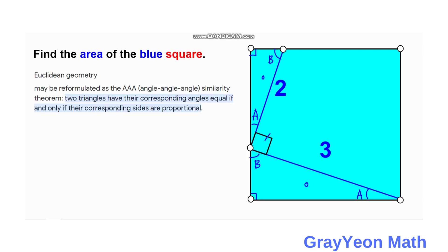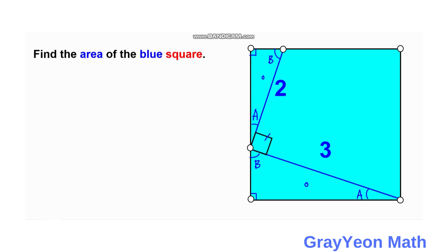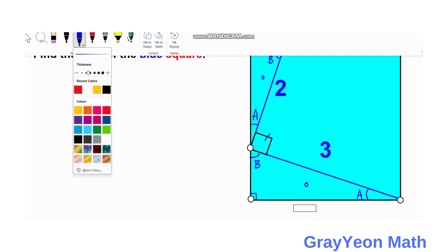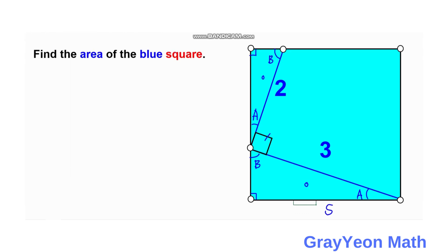Next, we label the sides. We label the side of the square as S. This part we label as A, and therefore this segment should be S minus A.